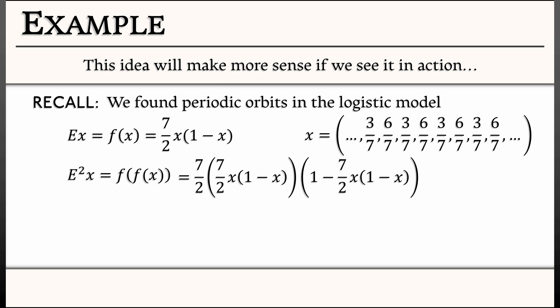Now, if I multiply that out, simplify it a little bit, I get minus 49 eighths times x times quantity 7 x cubed minus 14 x squared plus 9 x minus 2. And I claim that the points 3 sevenths and 6 sevenths are equilibria for this system. And we could keep going. We could look for period 4 orbits or other periods as well.